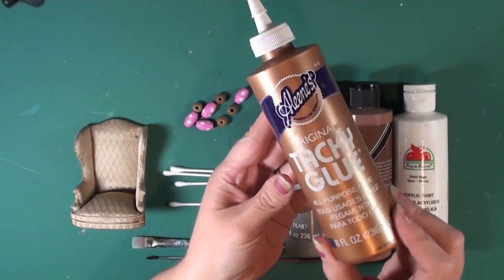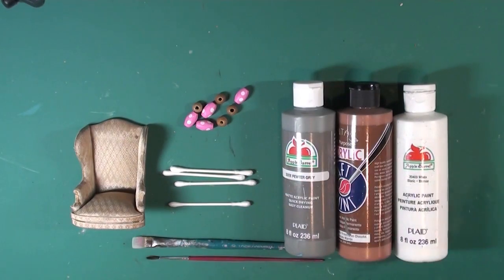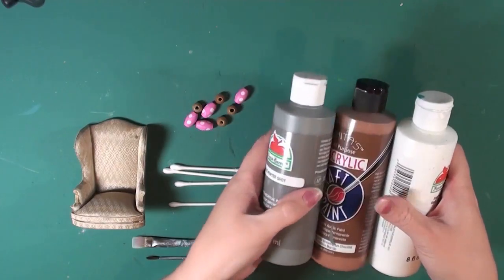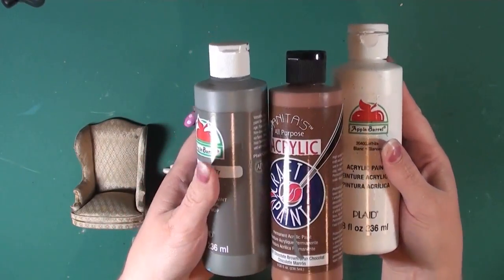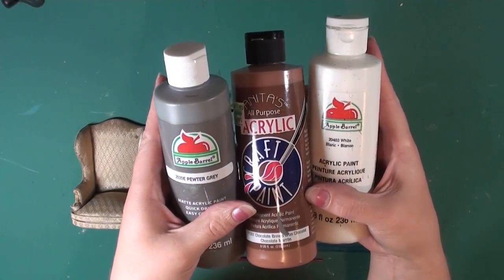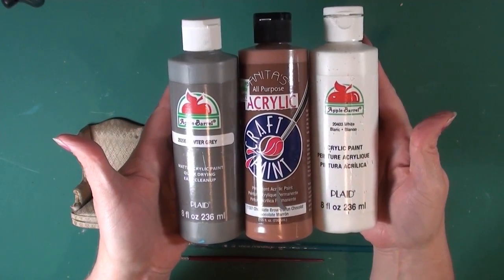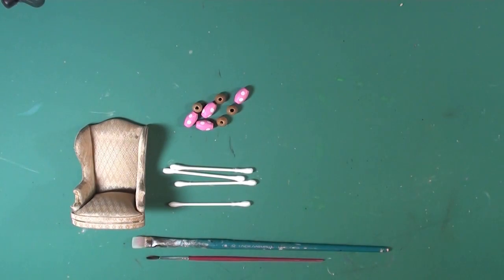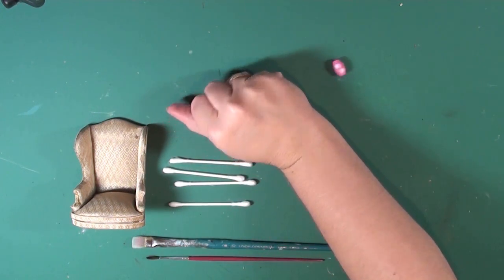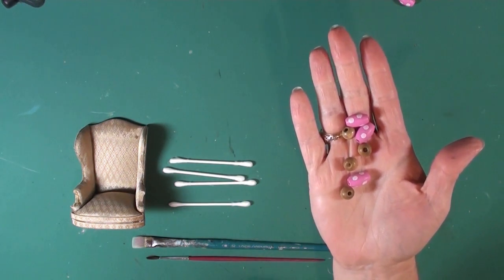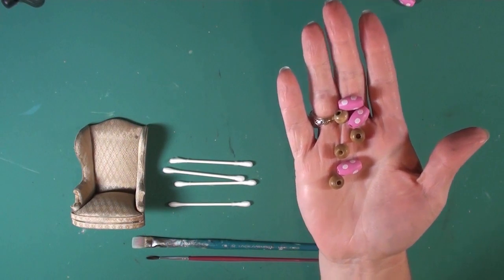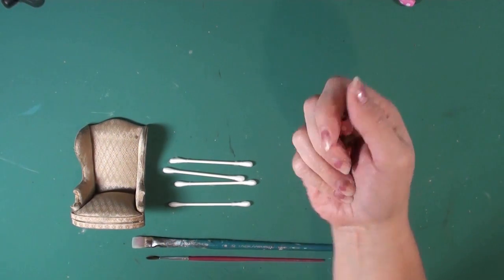You can also glue things with the Mod Podge but you have to get a brush out for that, so it's just easier for me to have the tacky glue bottle. You'll need various assortments of muted tones or earth tones, so I'll add a few more in there but those are just some examples. I'm going to use some beads that I found. These are some of my daughter's beads she's not using anymore.